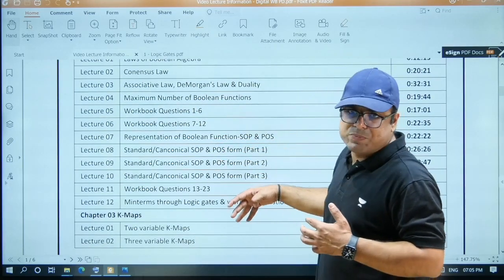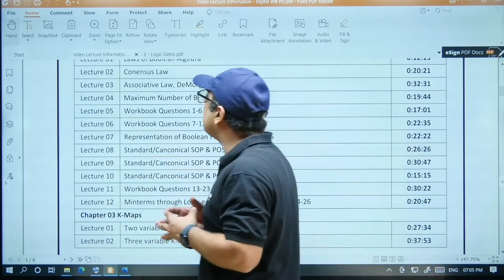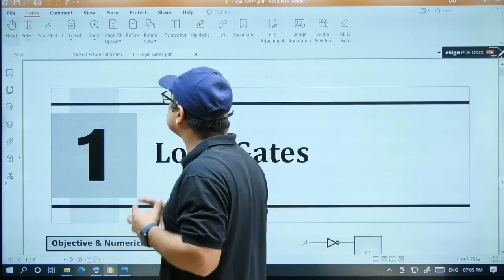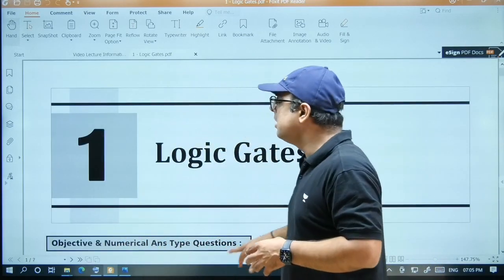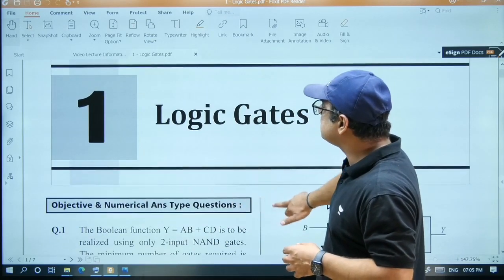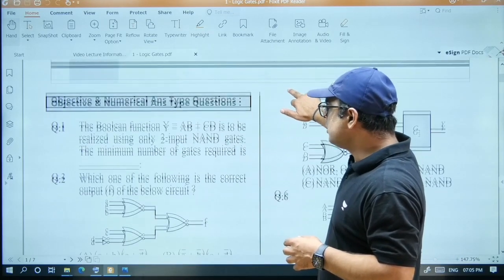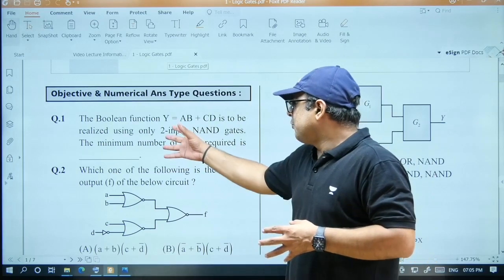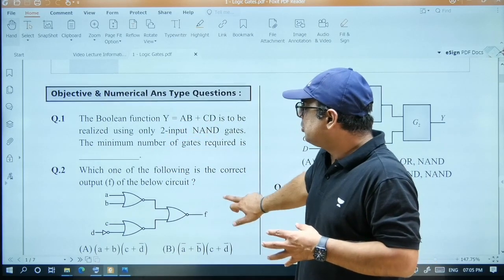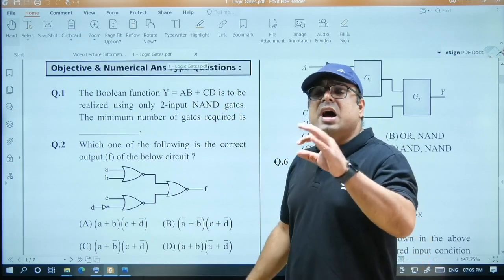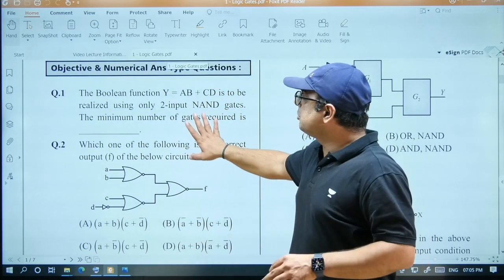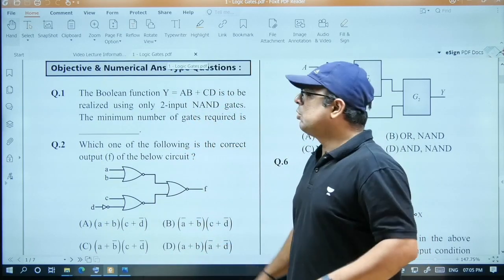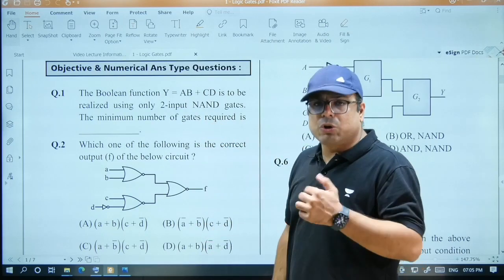If you want to see how a chapter looks like or what type of questions I have taken, this is an example of Chapter 1, Logic Gates. You can see these are Question 1, Question 2. You will get the questions. I have solved all the questions in the videos, so you can also try it on your own before seeing the solution, and then you can check the solution. If I have done it by some different method, it will give you another new concept.